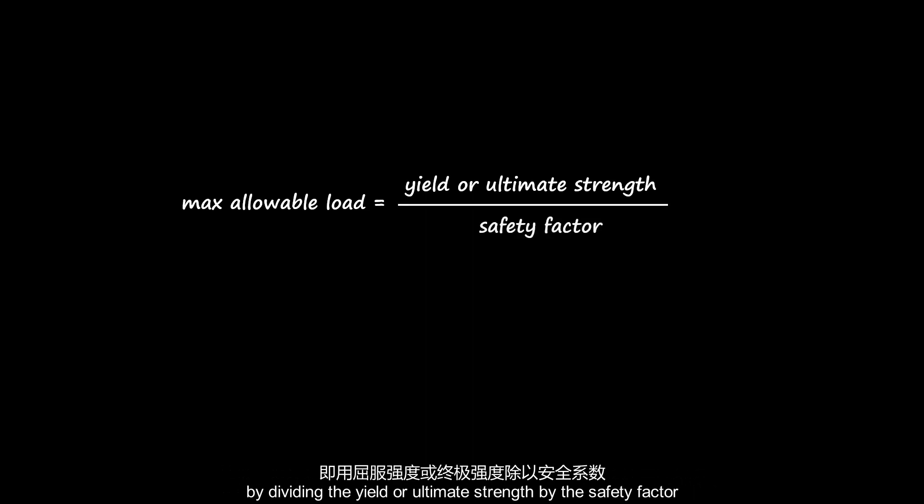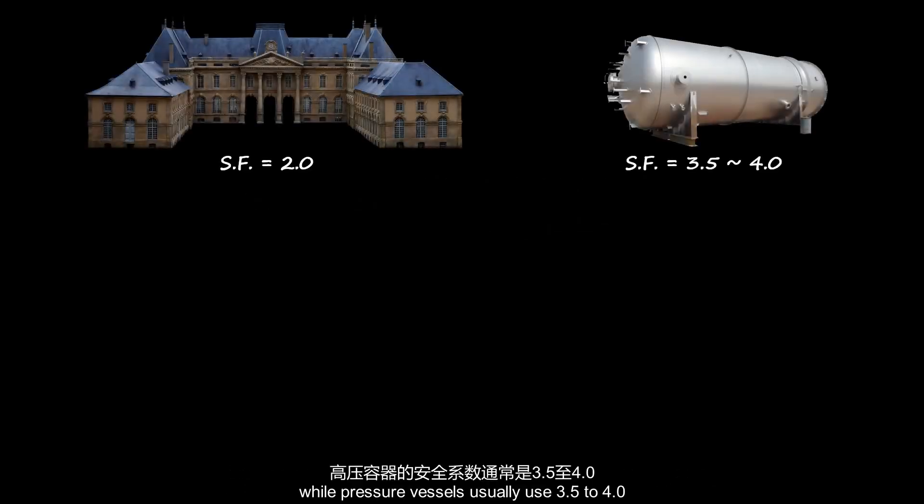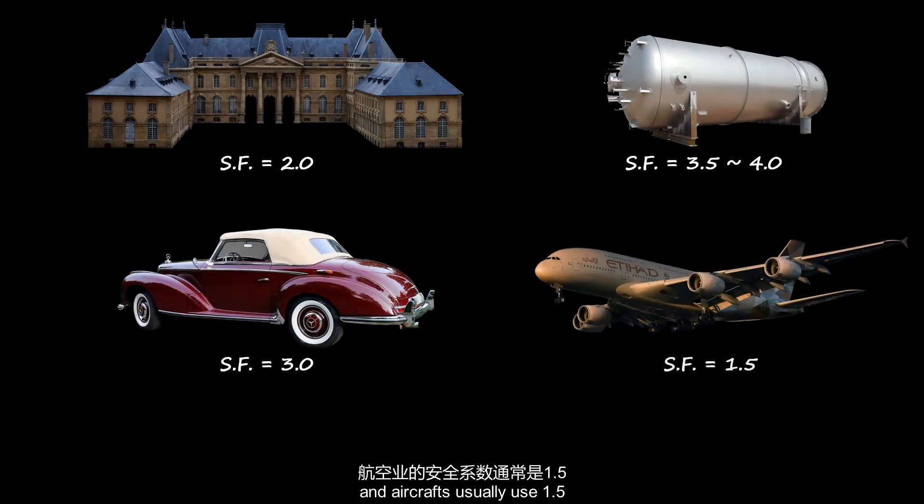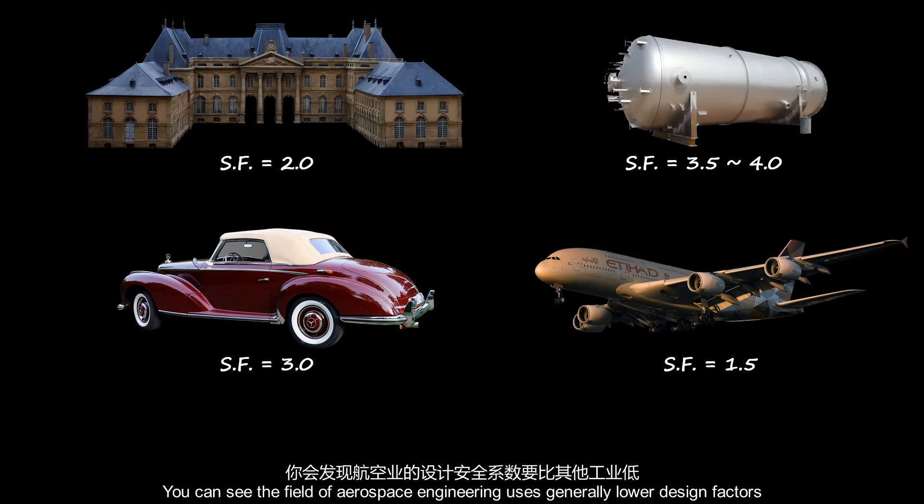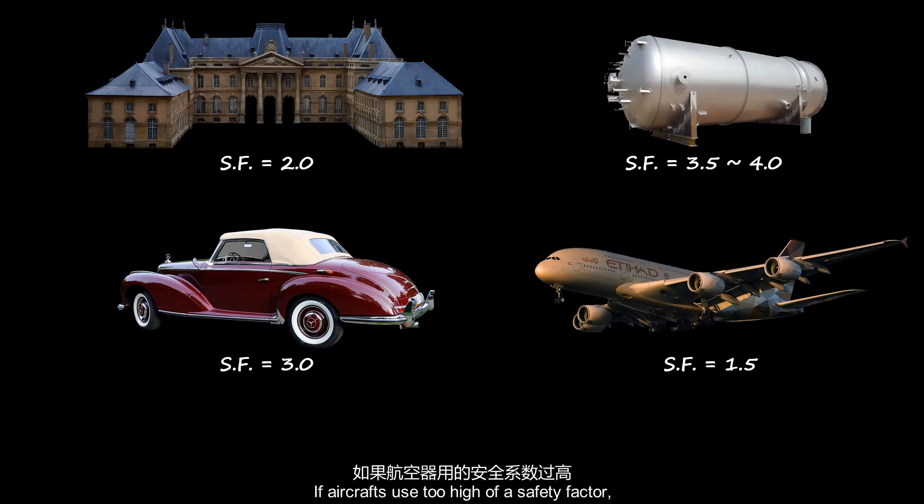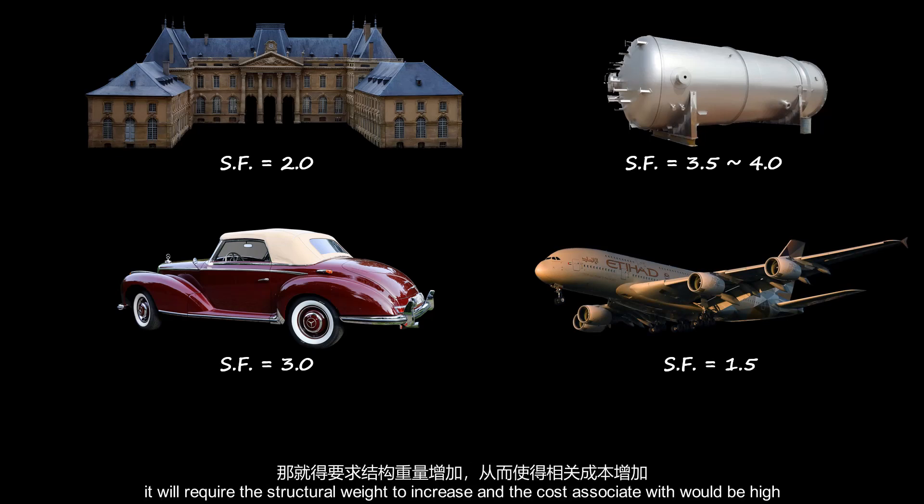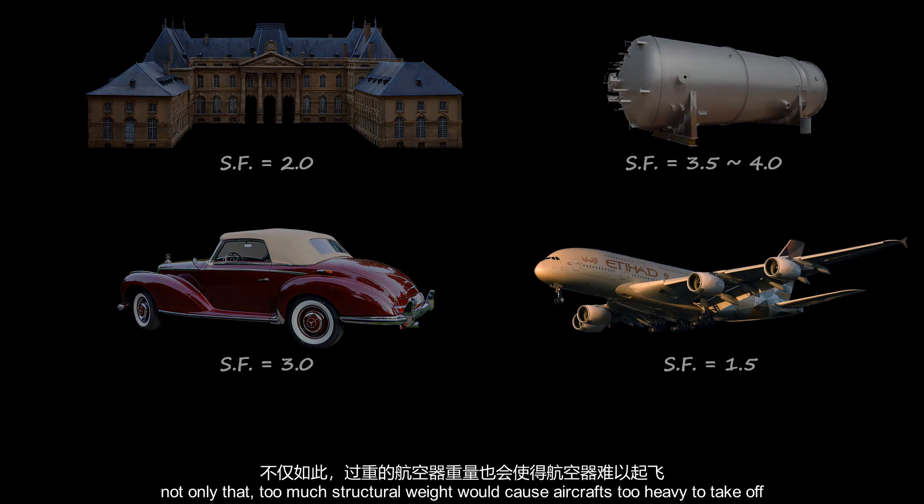Usually, engineers will design to keep the max allowable load well below failure by dividing the yield or ultimate strength by the safety factor. And safety factors differ between industries. Buildings usually use safety factor of 2.0, while pressure vessels usually use 3.5 to 4.0. Automobiles usually use 3.0, and aircraft usually use 1.5. You can see the field of aerospace engineering uses generally lower design factors. If aircraft use too high of a safety factor, it will require structural weight to increase and the cost associated would be high. Not only that, too heavy of a structural weight would cause the aircraft too heavy to take off.